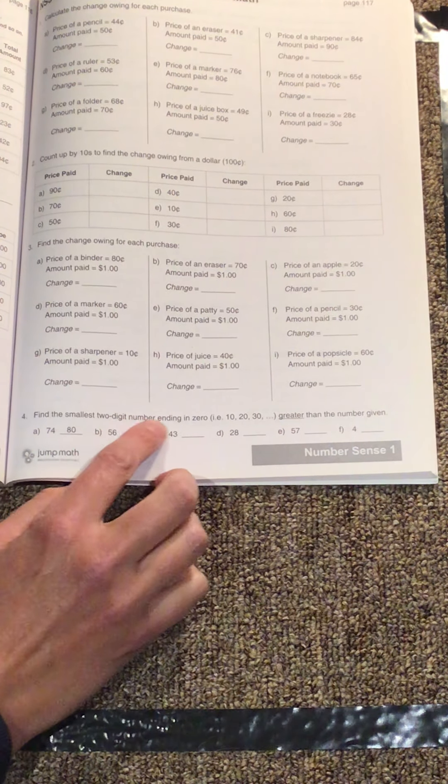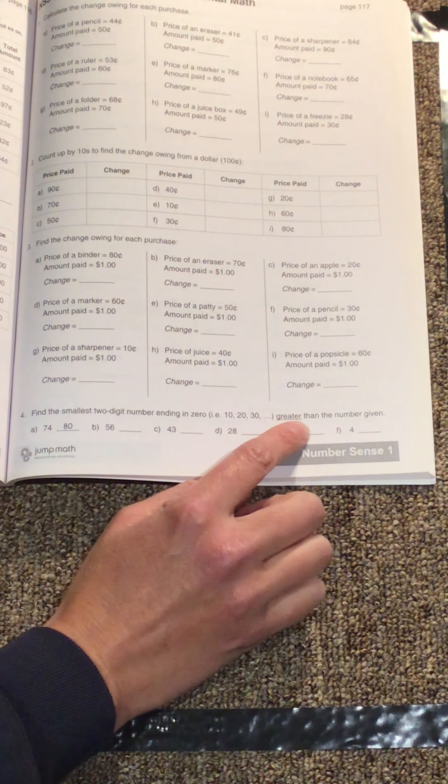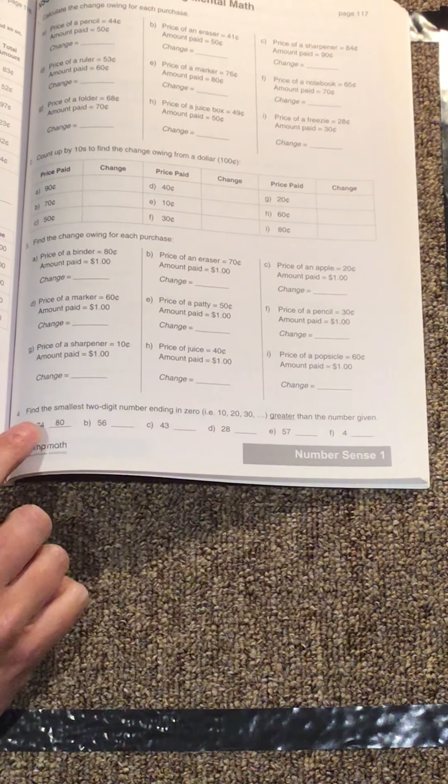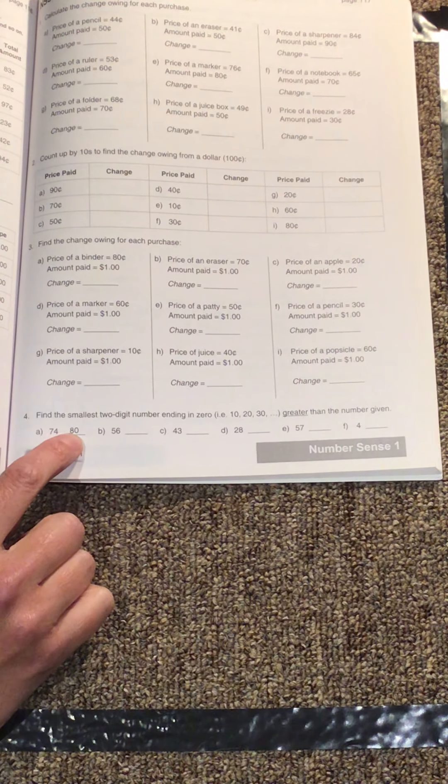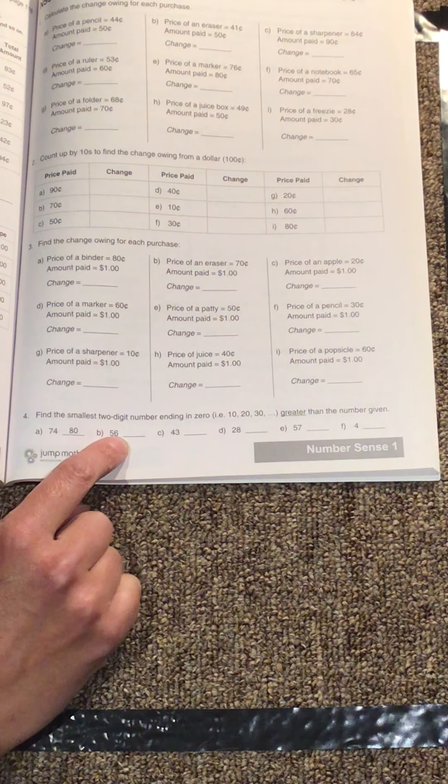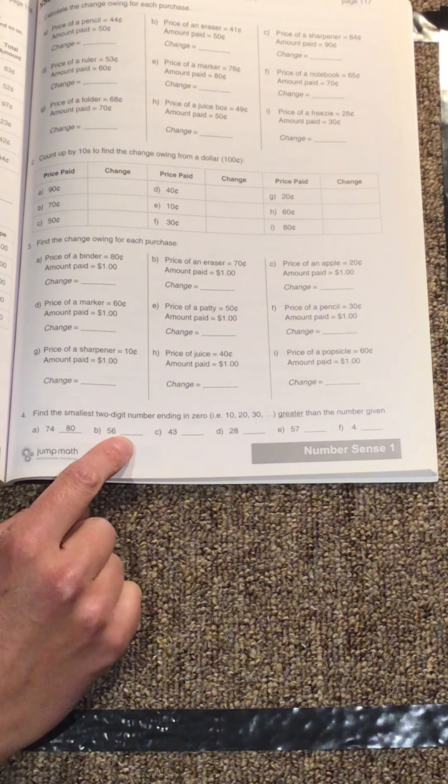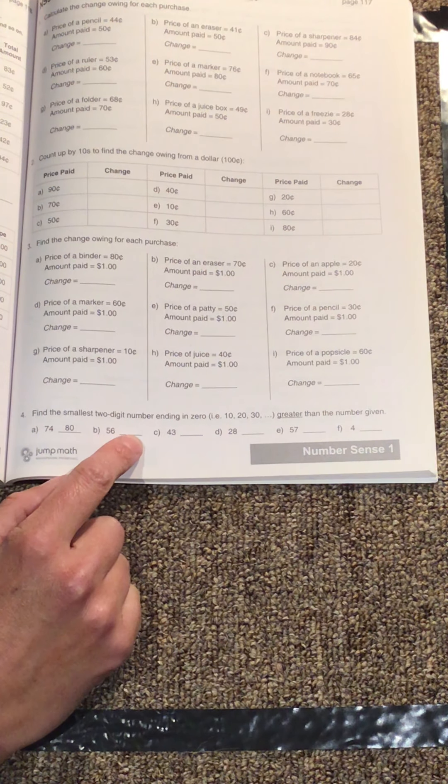Find the smallest two-digit number ending in a zero, so a group of 10, that is greater than the number given. So 74, counting upwards, the next number ending in a zero would be 80. So count up from 56, or go up on your hundreds chart and figure out what the next biggest group of 10 is.